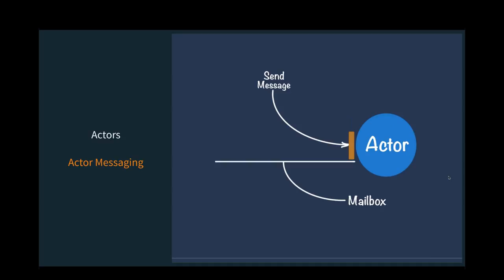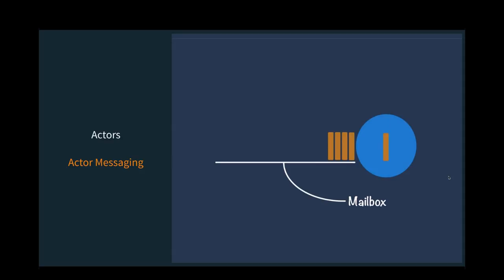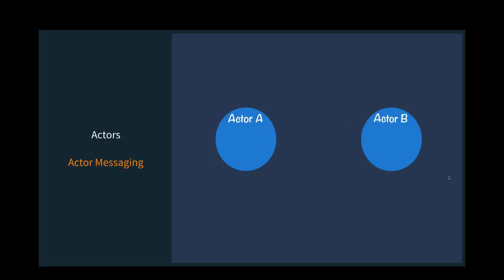In an ACA system, actors communicate by sending each other messages asynchronously. It's like texting — you send a message and you're free to continue; you're not suspended waiting for a response like in a typical method invocation. In this example, actor A sends a message to actor B. B gets it, maybe that triggers a state change — say, actor B represents a bank account and a withdrawal comes in, changing the balance. Actor B can then send a message back to A, but this isn't required.